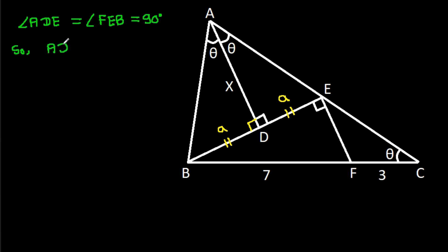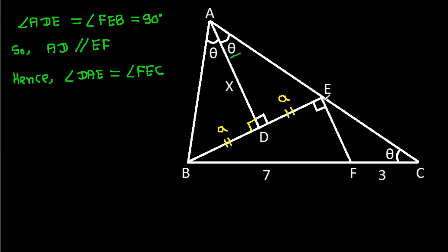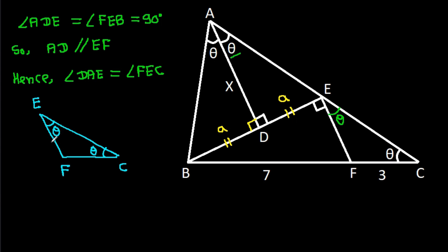So AD will be parallel and equal to EF. Hence angle DAE will be equal to angle FEB, and angle DAE is theta, so angle FEC will also be theta. Now in triangle EFC, these two angles are equal to theta, so EF will be equal to CF. And CF is 3, so EF will be 3.